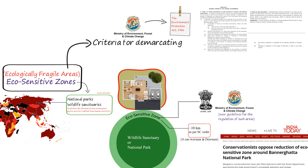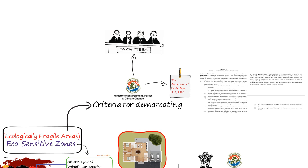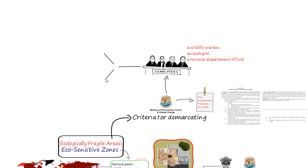Now that you are aware of the sections and clauses, the Ministry of Environment, Forests and Climate Change uses them to declare new guidelines and parameters from time to time. The government then forms a committee of experts from respective fields who can suggest recommendations to strengthen the policies and look after implementation. For creating eco-sensitive zones, the Ministry has asked all states to constitute a committee that consists of a wildlife warden, an ecologist and a revenue department official of the area concerned. The committee then suggests the best methods to manage such zones.